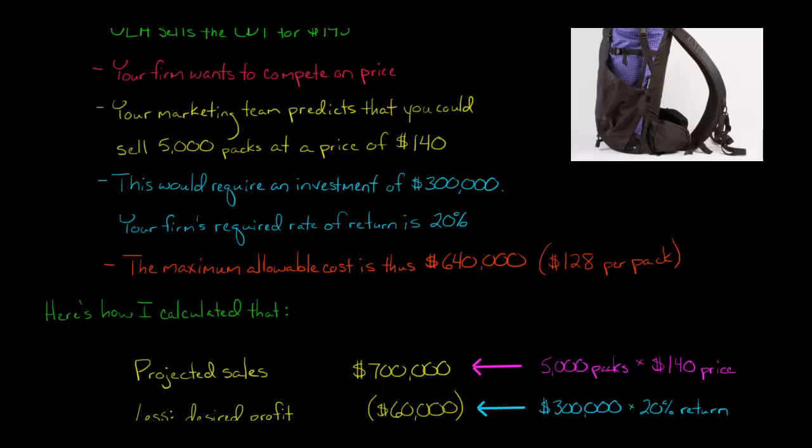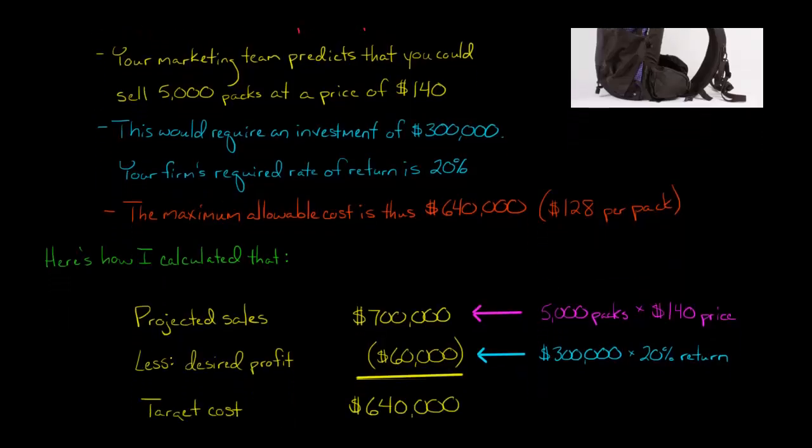If you divide that by 5,000 packs, which is what we said they think they're going to sell, it'd be $128 per pack. But let me go through each step and walk you through this so you completely understand. First, what do we think we're going to do in sales here based on the price? Remember, we set the price first. We're not going to build the product and figure out how much it costs and then later set the price. So in this case, it was $140, that's going to be our price per unit, 5,000 packs. So that's going to be $700,000 in terms of revenue.